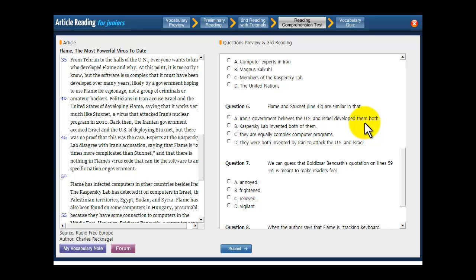Let's look at the choices. Well, that could possibly be true because, like it says in 40 and 41, politicians in Iran accuse Israel and the United States of developing Flame, which we read before. So A sounds like a potentially right answer. Again, let's click on it first and then let's move on to the other choices to see if there's one that might be better.